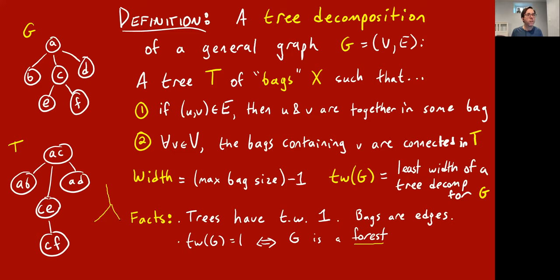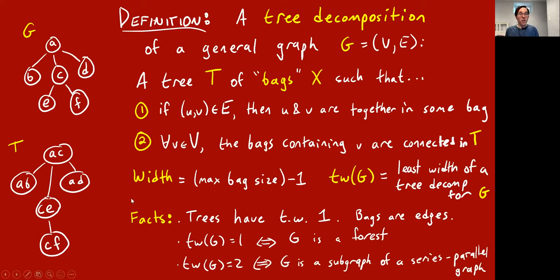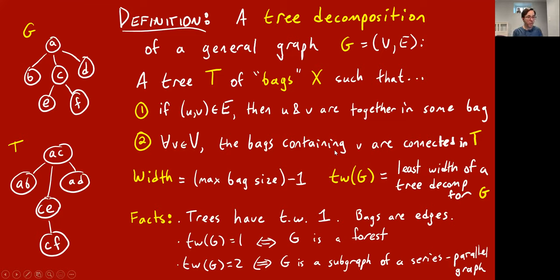There's a question: does the connected subtree of bags containing a vertex have to be a path? No — it just has to be a connected subtree, not necessarily a path. Another fact: a graph has tree width two if and only if it's a subgraph of a series-parallel graph. Series-parallel graphs have tree width two, any subgraph also has tree width two, and this characterizes all tree-width-two graphs. The fact about tree width two is not easy to prove. Once you get to tree width three there's no catchy explanation — it just is what it is.